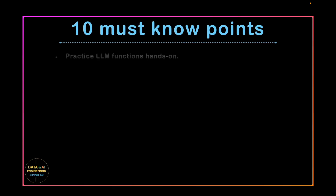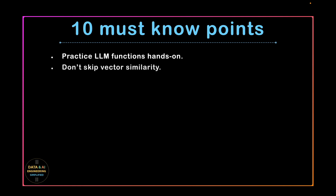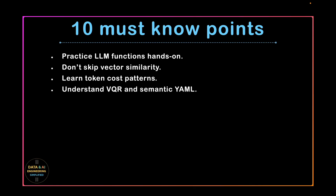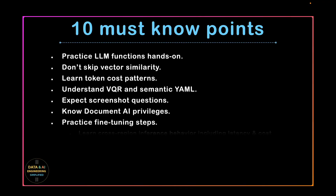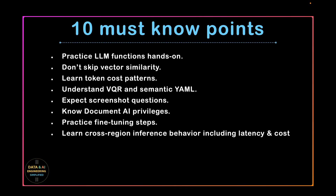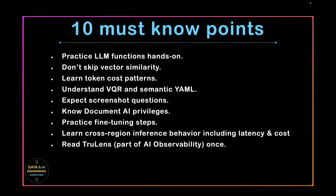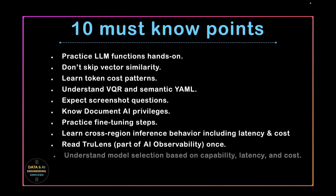Let me quickly recap the must-know points. Practice LLM functions hands-on. Don't skip vector similarities. Learn token cost patterns. Understand the verified query repository and semantic YAML file construct. Expect screenshot questions during the exam. Know DocAI privileges very well. Practice fine-tuning steps. Learn cross-region inference behavior including latency and cost. Read the TrueLens part of AI observability. Understand model selection based on capability, latency, and cost.